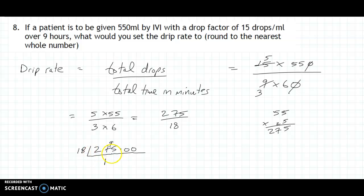Now 18 into 95, that mightn't be so easy. So you might go up to your rough work here and go 1 times 18 is 18, 2 times 18 is 36, and so on.